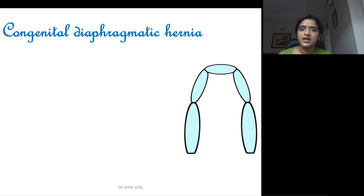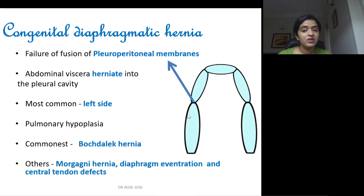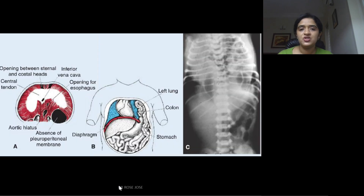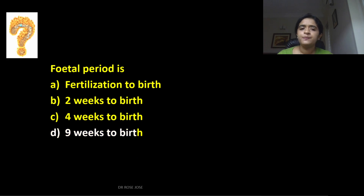Regarding congenital diaphragmatic hernia: the pleuroperitoneal membrane separates the pleural cavity from the peritoneal cavity. If there is a defect or fusion failure of this membrane, the abdominal viscera from the peritoneal cavity herniate into the pleural cavity. This is most common on the left side; as a result the lung cannot develop properly, causing pulmonary hypoplasia. The commonest form is Bochdalek hernia; other varieties include Morgagni hernia, diaphragmatic eventration, and central tendon defects.